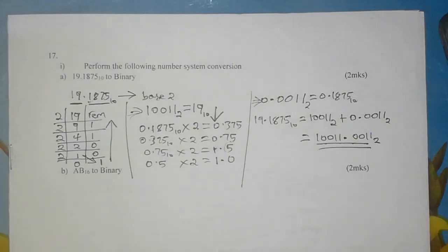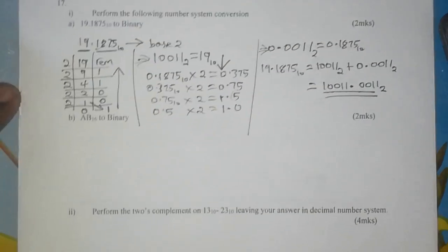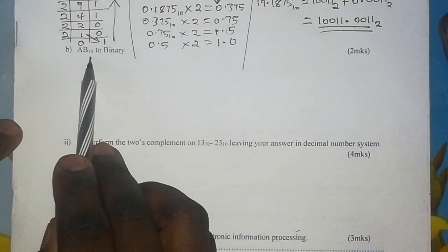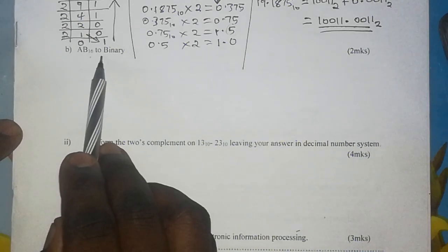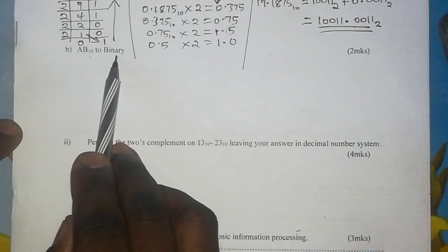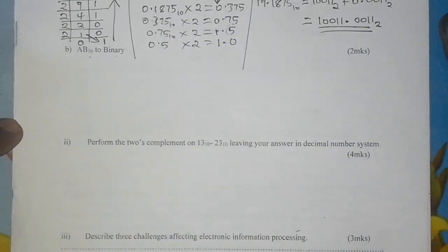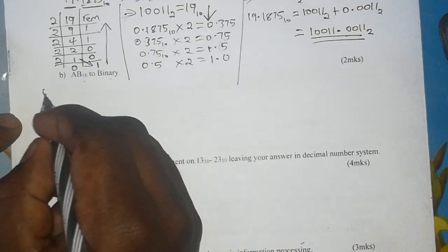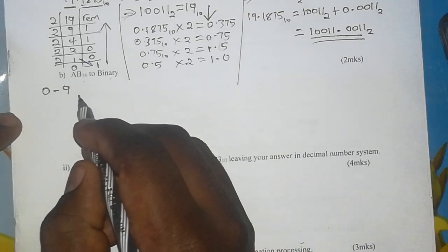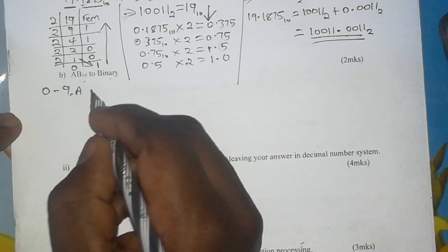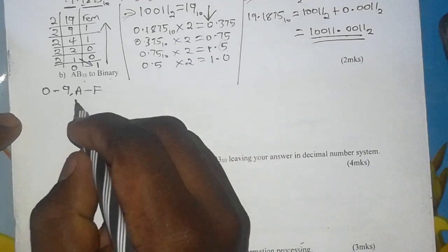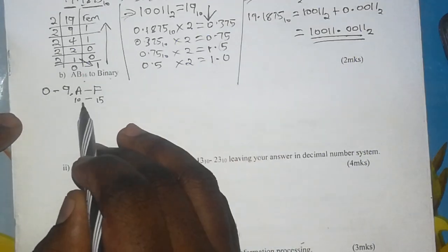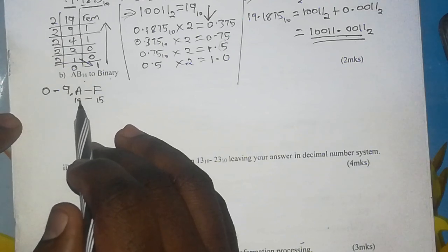Hello, once again. We move on to another question on the same paper from the previous video. This time we have a hexadecimal number, that is base 16, being converted to the binary number system. Now, in the hexadecimal number system, the digits begin from 0 up to 9, just like in the decimal number system, and then we follow with A up to F, where A stands for 10 through to F standing for 15. That is the most important point to note when dealing with hexadecimal.